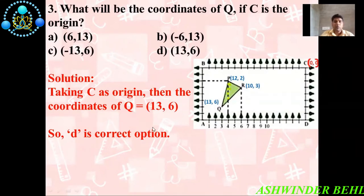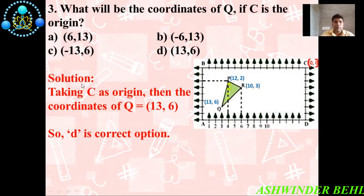Third question: what will be the coordinate of Q if C is the origin? The four options are: A) (6, 13), B) (−6, 13), C) (−13, 6), D) (13, 6). Now for the solution — taking C as the origin, the coordinate of Q is (13, 6). With the help of this picture, you can easily identify Q as (13, 6). So D is the correct option.